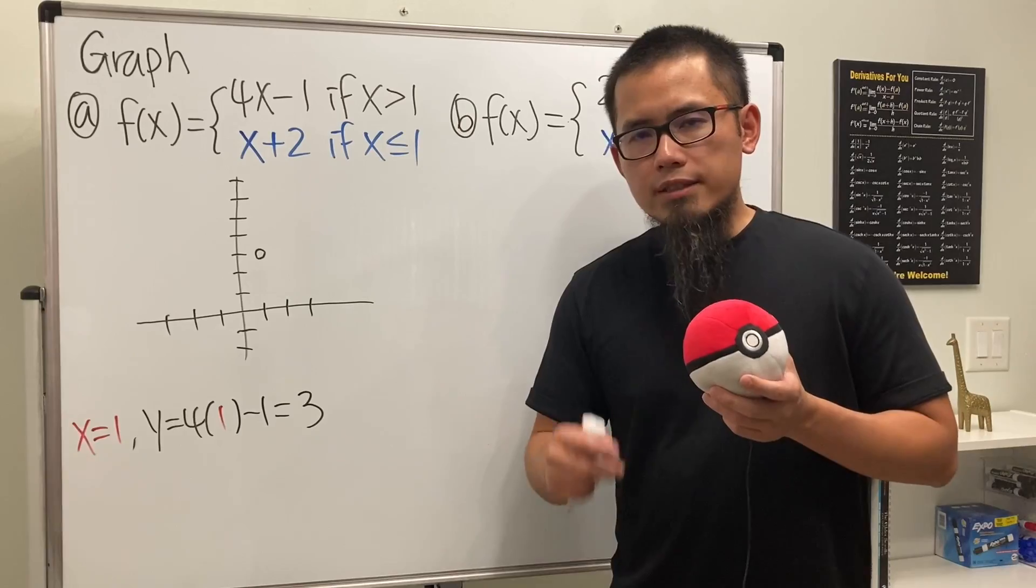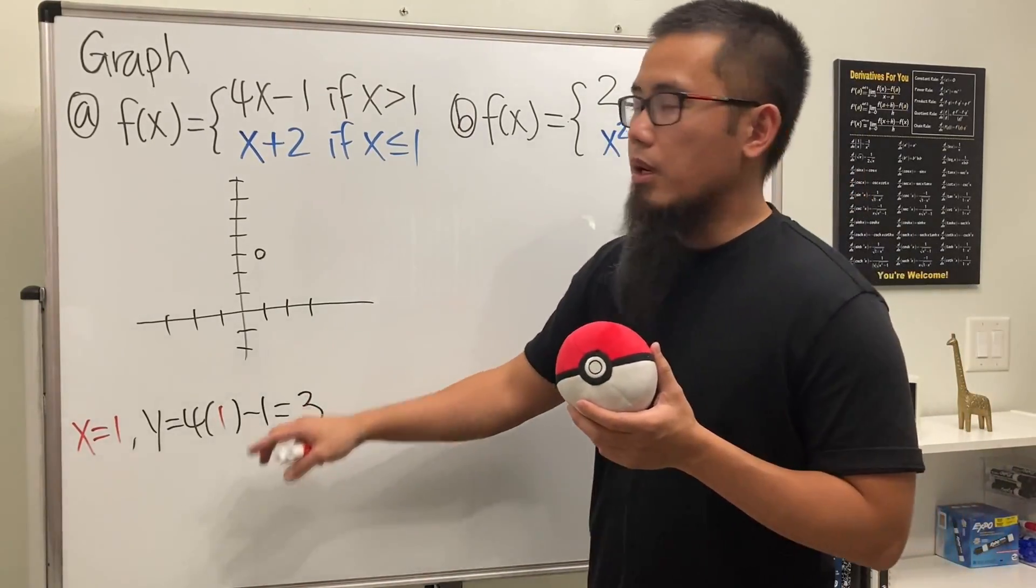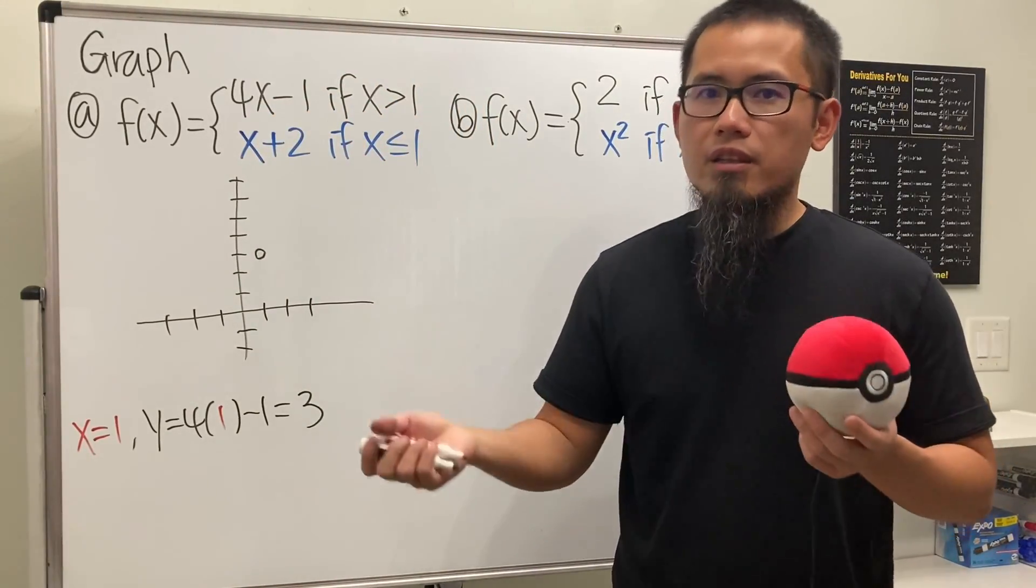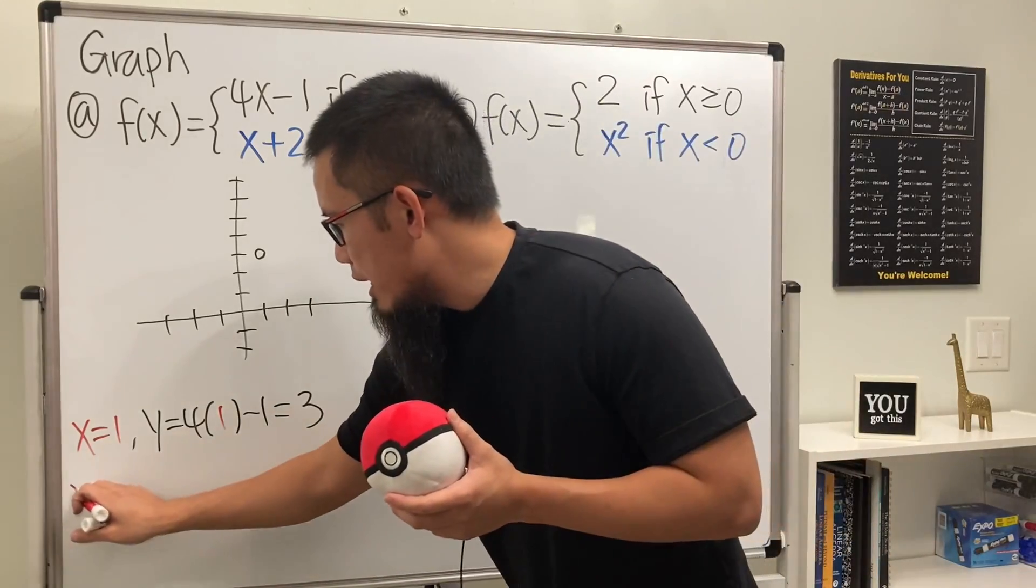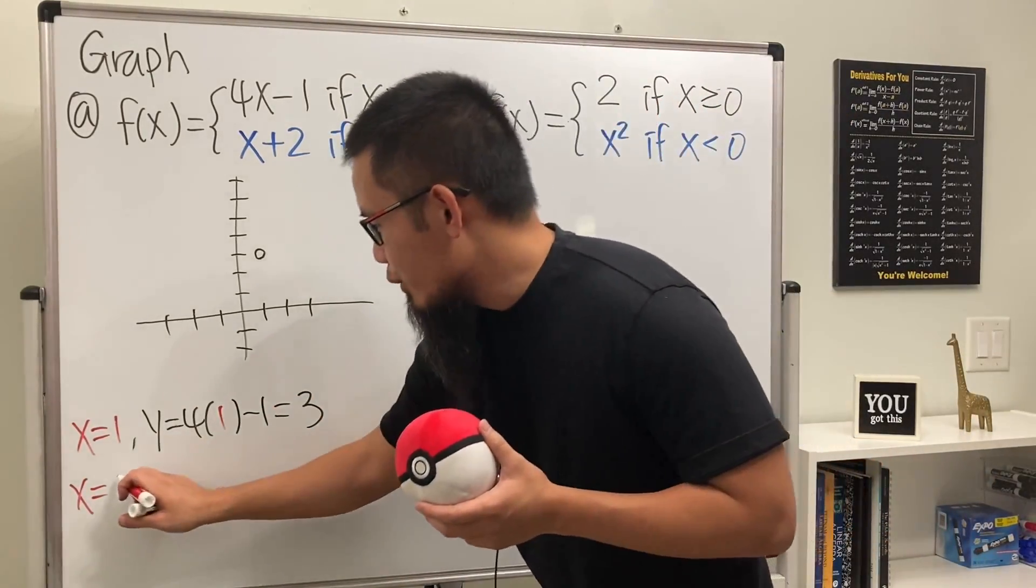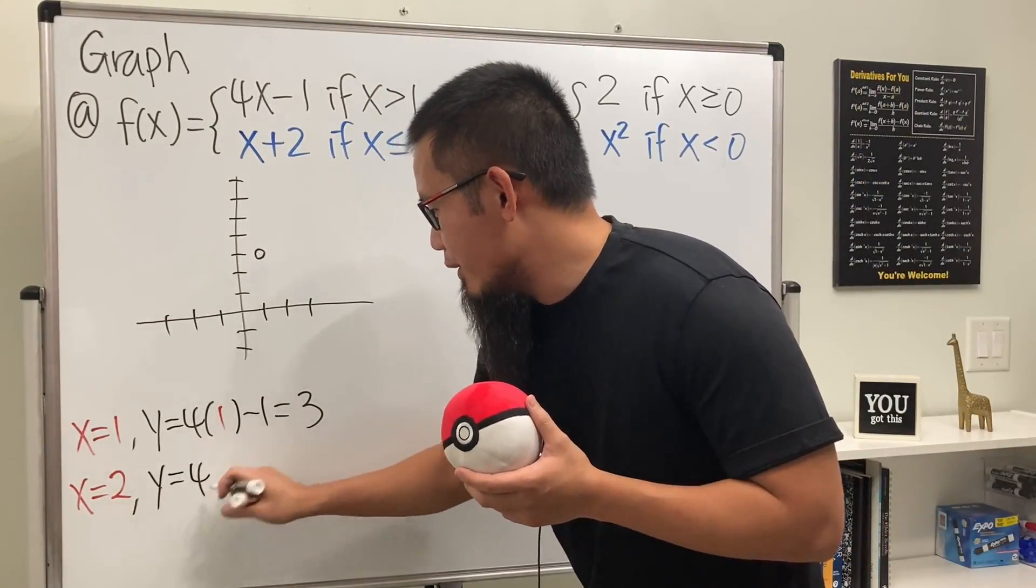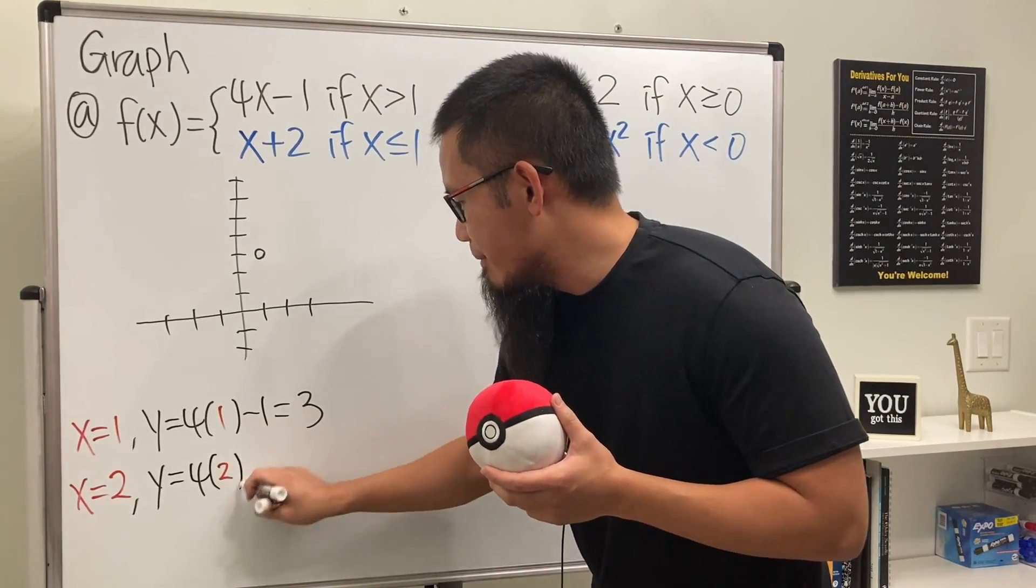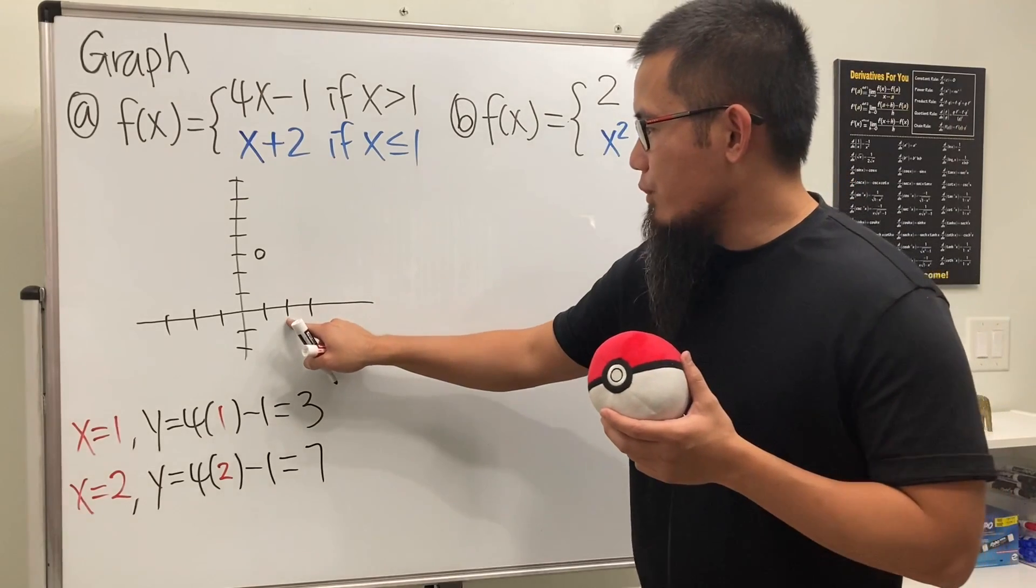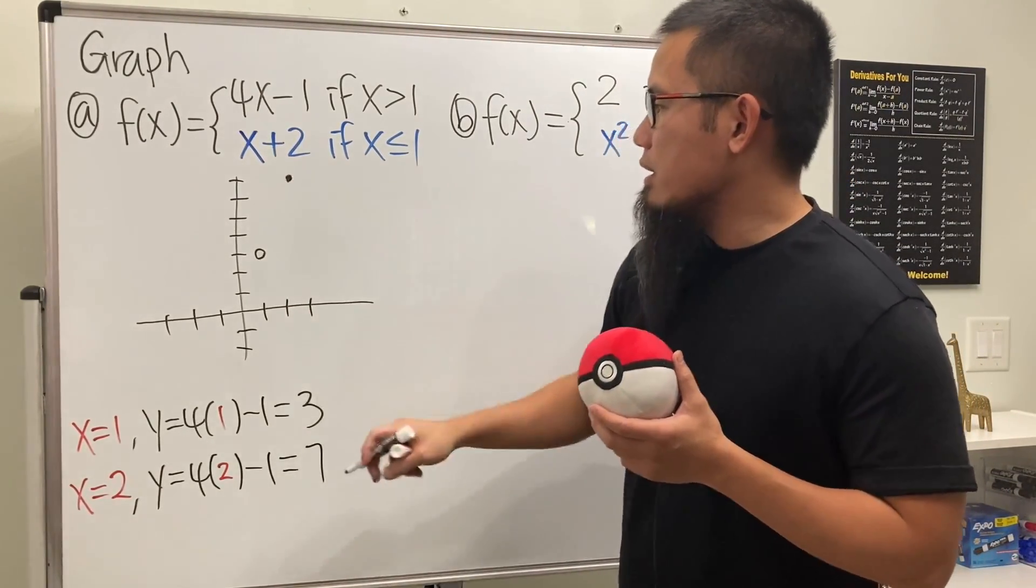Well, remember, as long as we have two points, then we can get the line. So why don't we just pick a number bigger than 1 and plug it into this, and then we can just get the second point and then connect the dots. So let's go ahead and pick x is equal to, let's say, 17. No, just kidding, of course. Don't hurt yourself. Pick x is equal to 2. So y equals 4 times 2, and then minus 1, and that will give us 7. So we see we have 2, 7, and this time it's going to be a solid point, and that will be it.